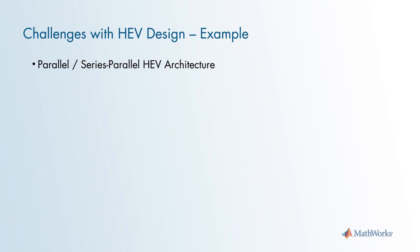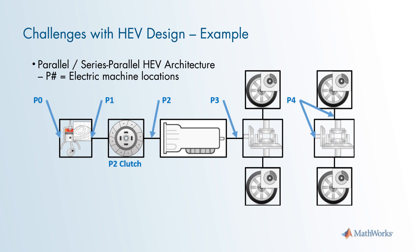Here is an example of the challenges in selecting an HEV architecture. This is a typical parallel slash series parallel HEV architecture or topology. The P and the pound sign indicates where the location of the electric machines in the powertrain are. For example, the P0 location is the front of the engine. Typically, the machine is connected to the engine crankshaft through the front accessory drive belt. The P1 location is the flywheel side of the engine. The P2 location denotes the input to the transmission and always has a clutch between the motor and the engine. The P3 location can be located inside the transmission or on its output. And the P4 location is on the axle, which is the axle that is not connected to the internal combustion engine.